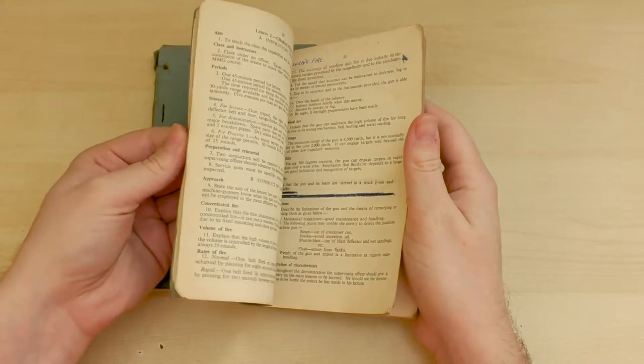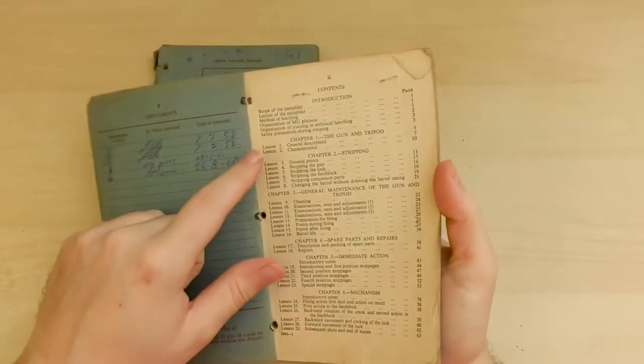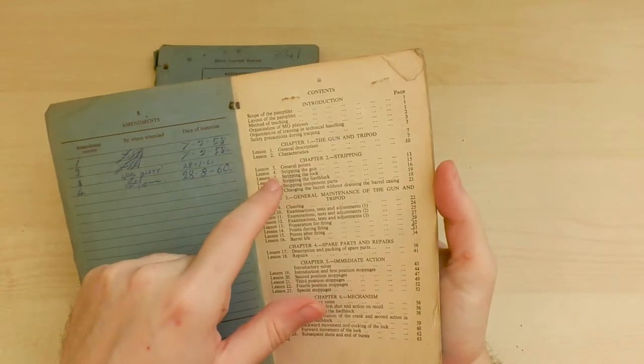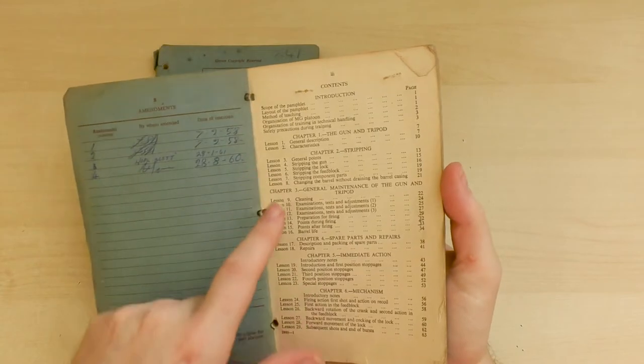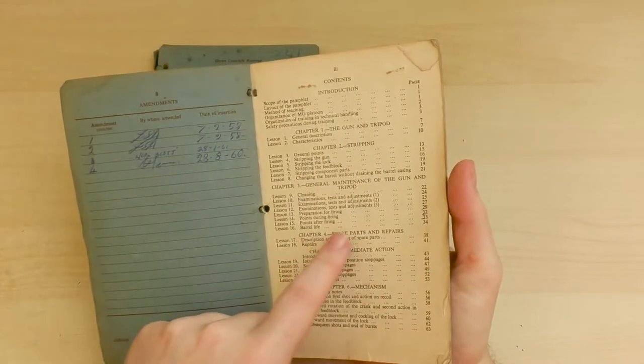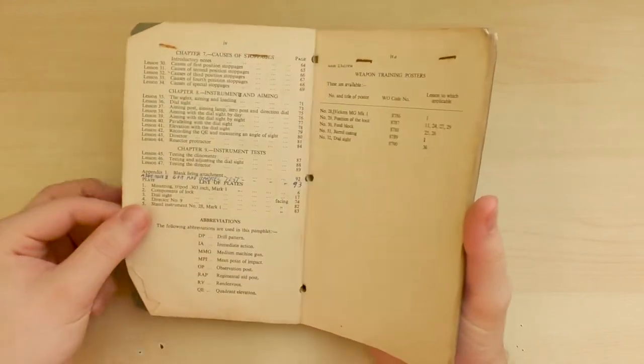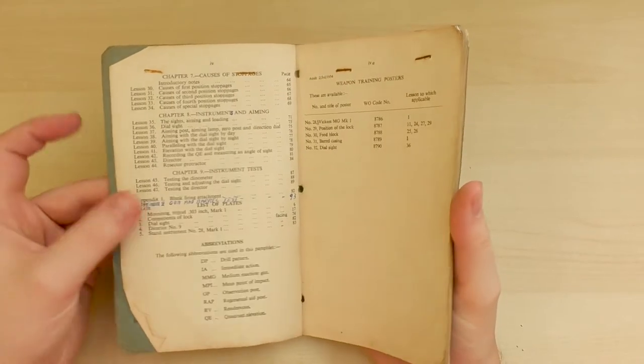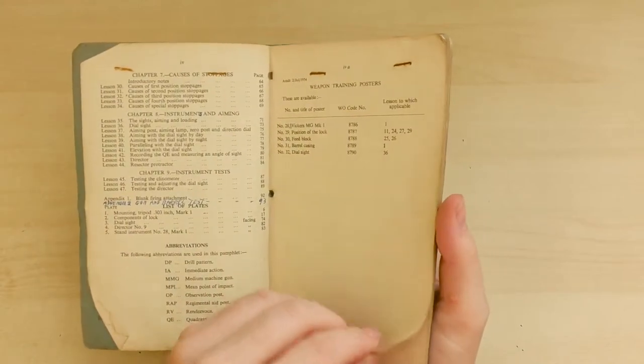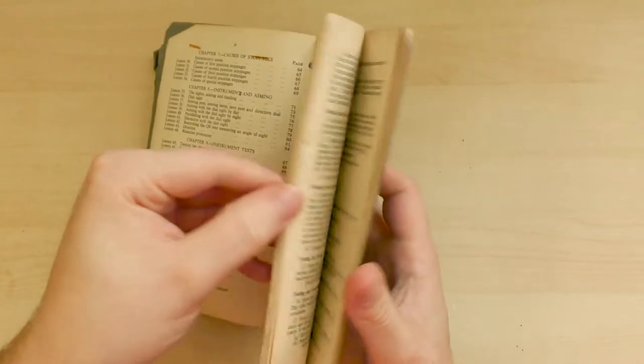Let's take a look at the content page. So we have general description characteristics of gun and tripod, how to strip the gun down, maintenance of the gun, spares and repairs, immediate action drills and an explanation of the mechanism, stoppages, instrument aiming, instrument tests. And we've got some of the posters that are available there listed.